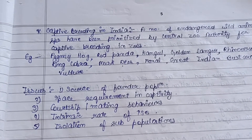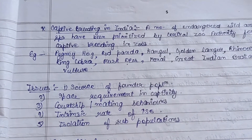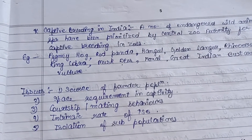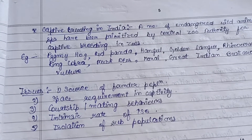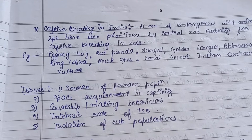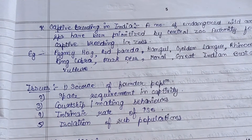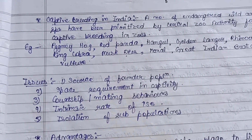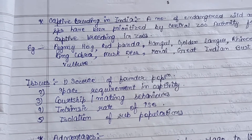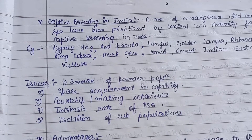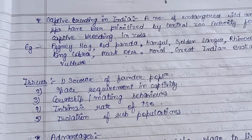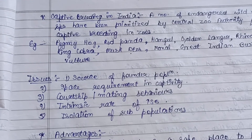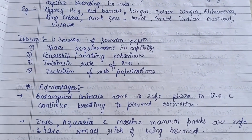Challenges related to the captive breeding program include: the source of the founder population — deciding which animal species should be considered; space requirements in captivity, which must match the animal's natural habitat; courtship and mating behavior; the intrinsic rate of increase; and isolation of sub-populations when there are differences within groups.